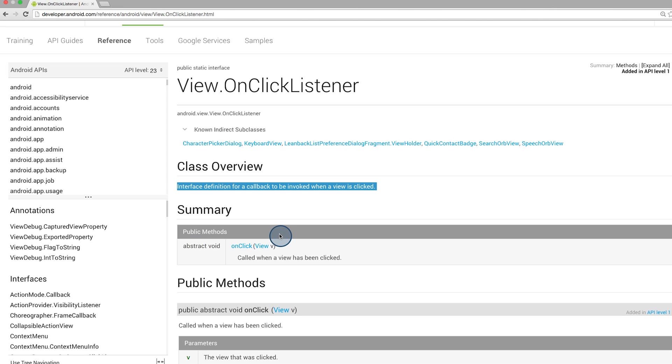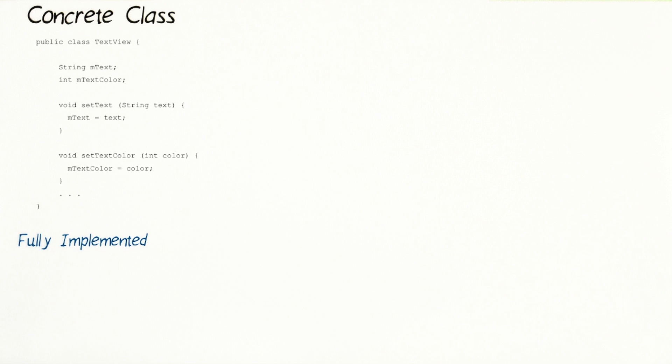At the top of this documentation page, in small font, it says interface. In the future, it's highly likely that you may come across another component in Android that is also an interface. So at this point, you may be wondering, wait a minute. How is an interface different from a class? The document pages look pretty similar.